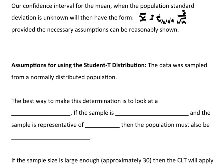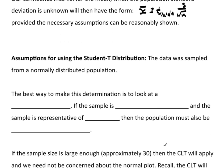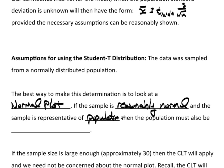So what are the assumptions for using the Student t-distribution? First of all, the data was sampled from a normally distributed population. Okay, we need the population that we came from to be normal. The best way to actually make this determination is to look at a normal plot. The idea here: if the sample is reasonably normal and the sample is representative of the population, then the population must also be reasonably normal.